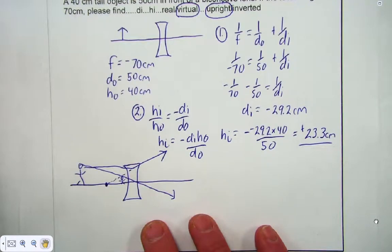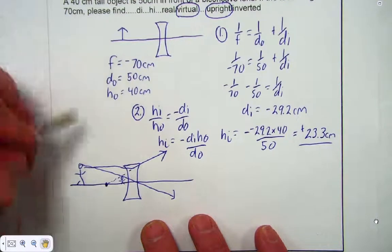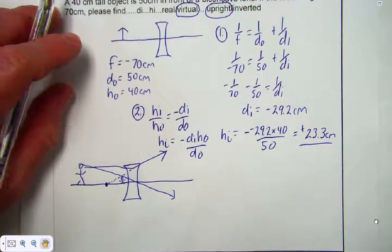It is reduced, which happened with our calculation. And it is virtual because it's on the same side of the lens.